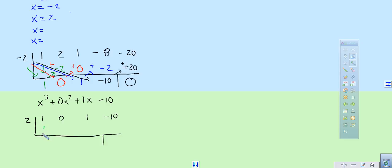We do the same process. Bring down the 1. Multiply. Put it right there. That's 2. We add. We get 2. We multiply. We get 4. We add. We get 5. We multiply. We get plus 10. We add them. We get a remainder of zero.